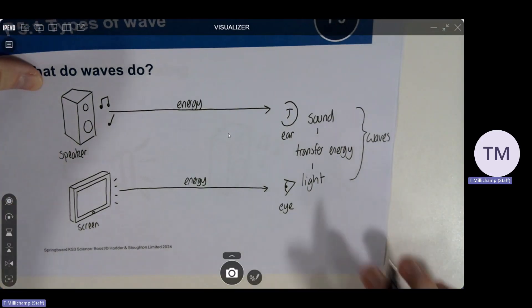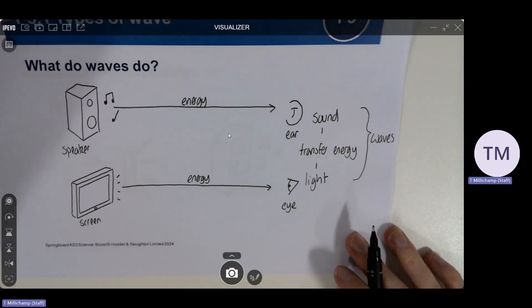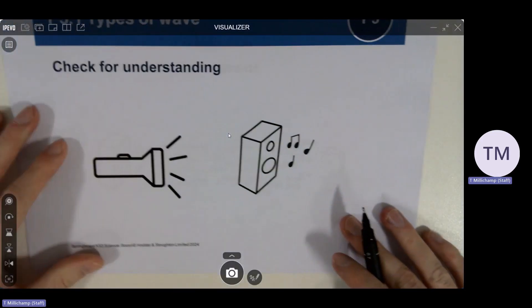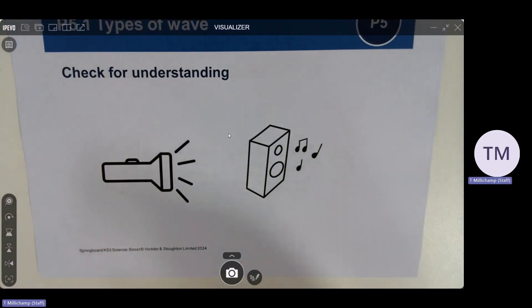At this point I would then do a check for understanding with the class of that small chunk of the information. So all of the check for understanding slides have a diagram that will sometimes give students a bit of a hint or just help you if you need to explain anything again.